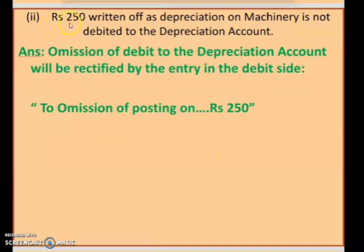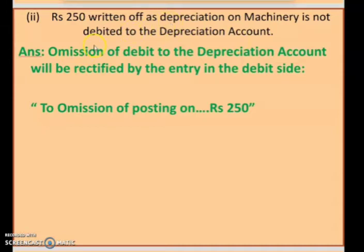Next question: Rupees 250 written off as depreciation on machinery is not debited to depreciation account. There was depreciation on machinery of rupees 250, and it was not debited to depreciation account. They omitted to record this entry. Omission of debit to depreciation account will be rectified by making the entry of depreciation on the debit side. You can rectify this error of omission related to depreciation account.